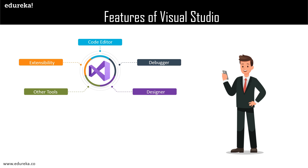Followed by that, we have the debugger. The remarkable debugger of Microsoft Visual Studio can work both as a machine-level debugger as well as a source-level debugger. It is capable of debugging managed code as well as native code, and can compile any programming language that supports Visual Studio. It can attach itself to a currently running process to conduct monitoring and debugging procedures, provided the source code is available.